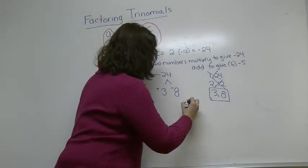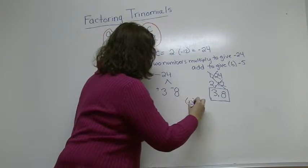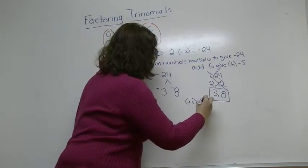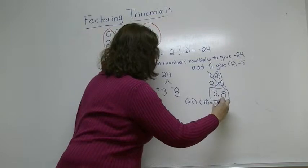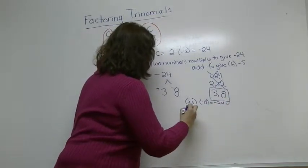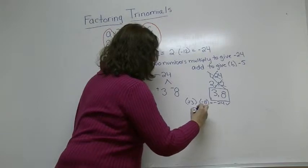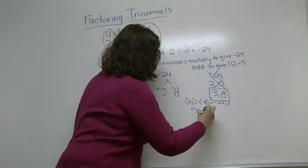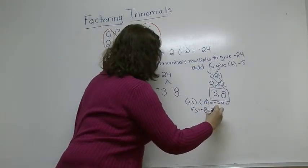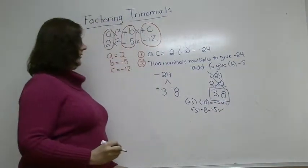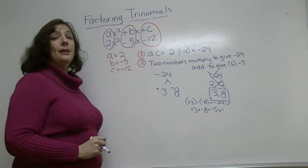If we want to verify, if we have a positive 3 times a negative 8, you can see we get a negative 24. Check. And if we have a positive 3 plus a negative 8, we get a negative 5. Check. So we met our two conditions that we needed for factoring.